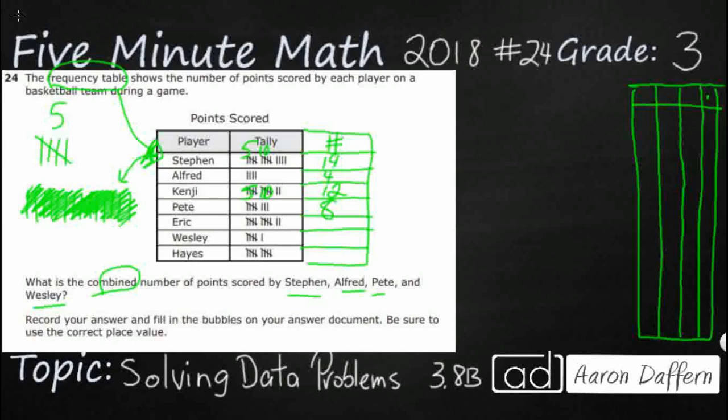Eric has got the same as Kenji, five, ten, and then two more, that makes twelve. Wesley's got five and one more, that's six. And Hayes has got five and five, so that makes ten. So now we've got the numbers that we need, so now we can look at our actual problem. This was just to help us here.